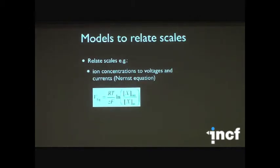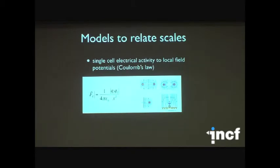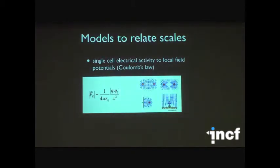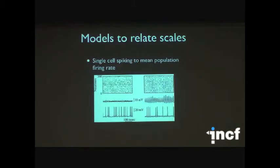Some simple examples of relating between scales: if you want to relate concentrations of ions to voltage, the Nernst equation already handles that perfectly well. To relate individual cell electrical activity to a local field potential, Coulomb's law lets you take the current sources and compute the field potential from a model neuron. Relating a population of spiking cells to a mean firing rate model is quite tricky — you average the firing rate, moving from a fine-grained to a coarse-grained model.